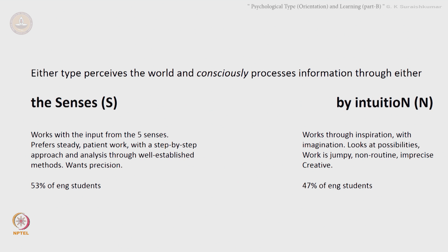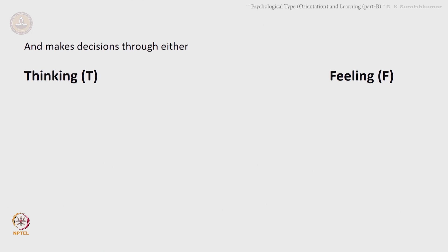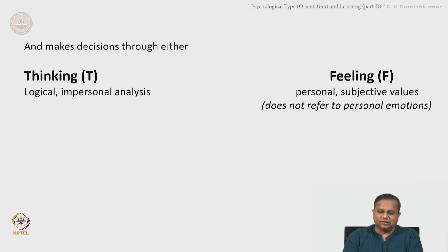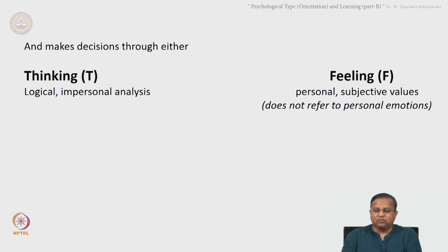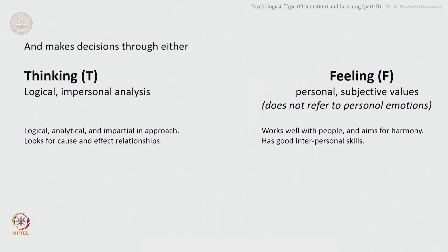Once they have perceived the world, they make decisions about what they have perceived through either thinking T or feeling F. Be a little careful here — thinking is quite straightforward logical impersonal analysis, whereas feeling refers to personal subjective values and does not refer to personal emotions. The T type are logical, analytical and impartial in approach and look for cause and effect relationships. The F people work well with others and aim for harmony with good interpersonal skills. The same study showed that 74 percent of engineering students are T type and 26 percent are F type.